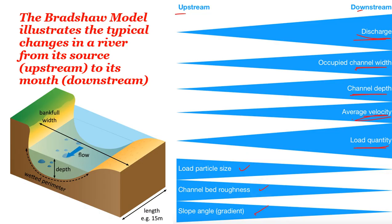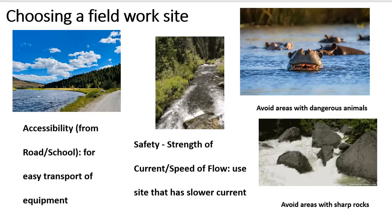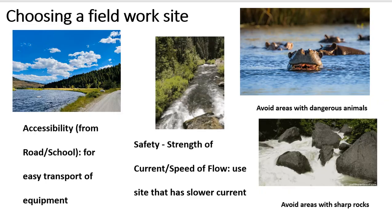Some key river features include discharge, depth, and width. The width of a river is the distance between two banks, and the depth is the distance from the surface of the water down to the bed. Before measuring these features, we need to understand the criteria for choosing a fieldwork site. First, you should check the accessibility of the area from the school or from a road, so it's easy to transport your equipment.